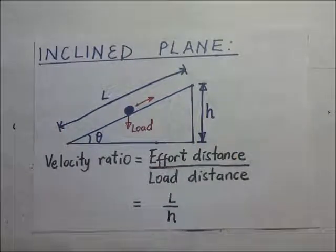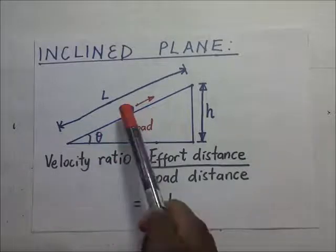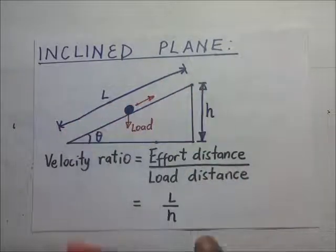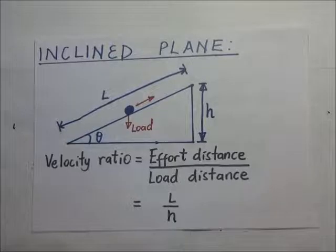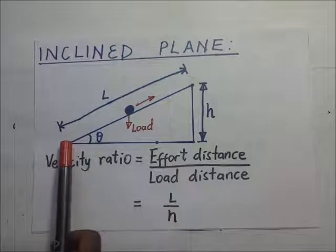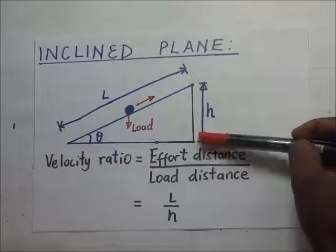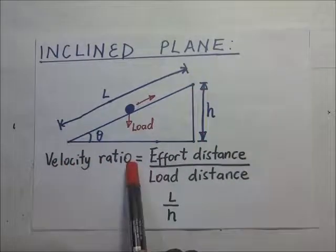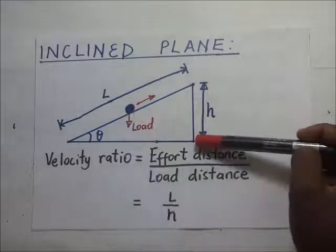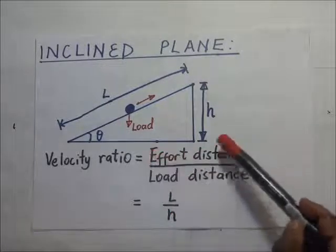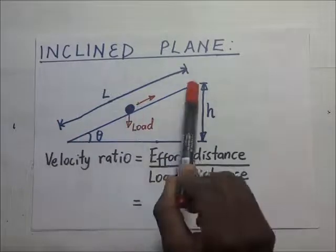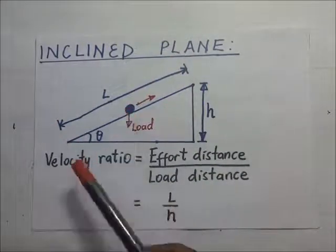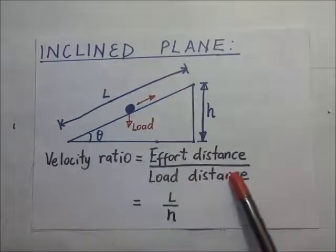This is why we use inclined planes. With an inclined plane, an effort is applied through distance L, which is equivalent to the length of the inclined plane. The velocity ratio is the effort distance over the load distance. The load is moved from ground level through a vertical distance H, while the effort moves through the length L along the inclined plane. So the velocity ratio is L divided by H.